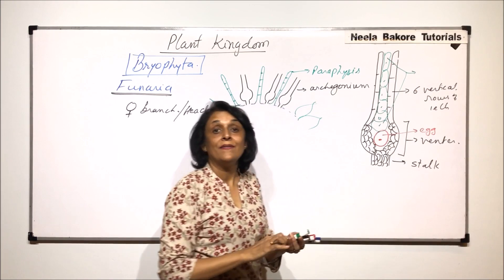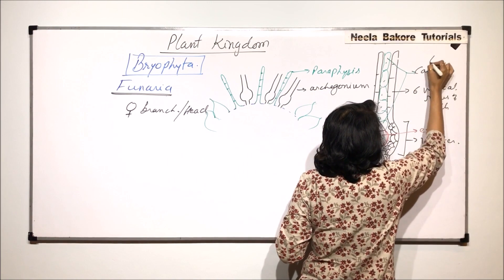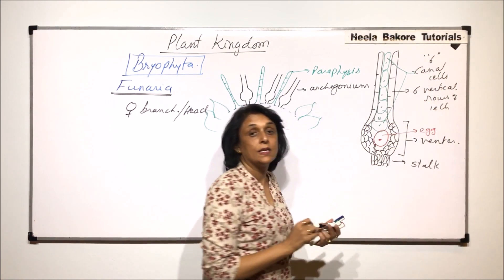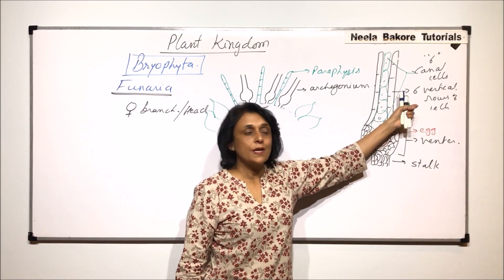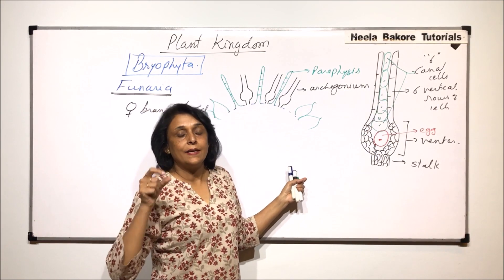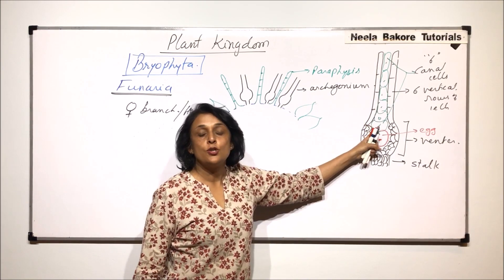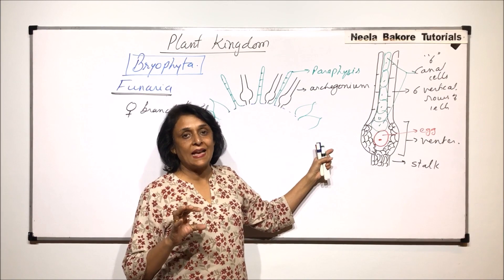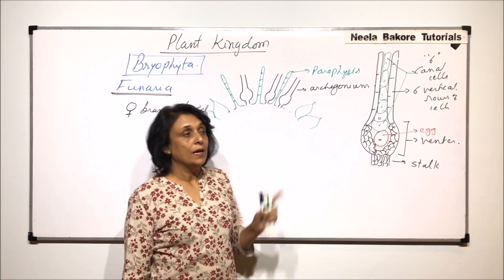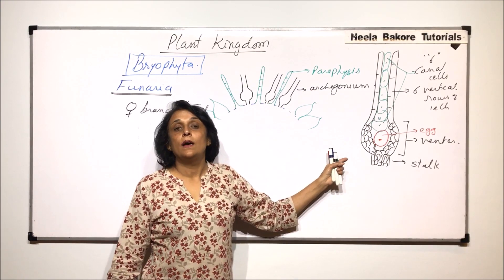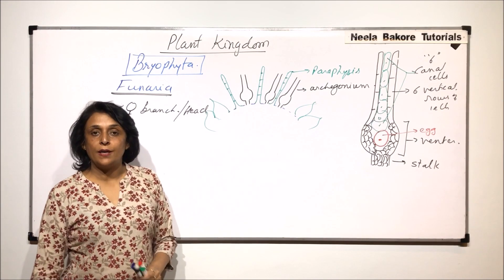And these canal cells are also six. The wall of the neck is also made up of six vertical rows of cells. And in the center, in the canal part also there are six canal cells which are filled. So there is no empty space as such. And the lower part of the venter is filled with this large egg. So this is how the archegonia is seen. And there are many archegonia here.